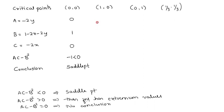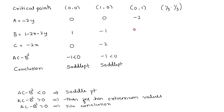At (0, 1): A = -2, B = -1, C = 0, so ac - b² = 0 - 1 = -1 < 0. Therefore (0, 1) is also a saddle point. At (1/3, 1/3): A = -2/3, B = 1 - 2/3 - 2/3 = -1/3, C = -2/3, so ac - b² = (-2/3)(-2/3) - (-1/3)² = 4/9 - 1/9 = 1/3 > 0.